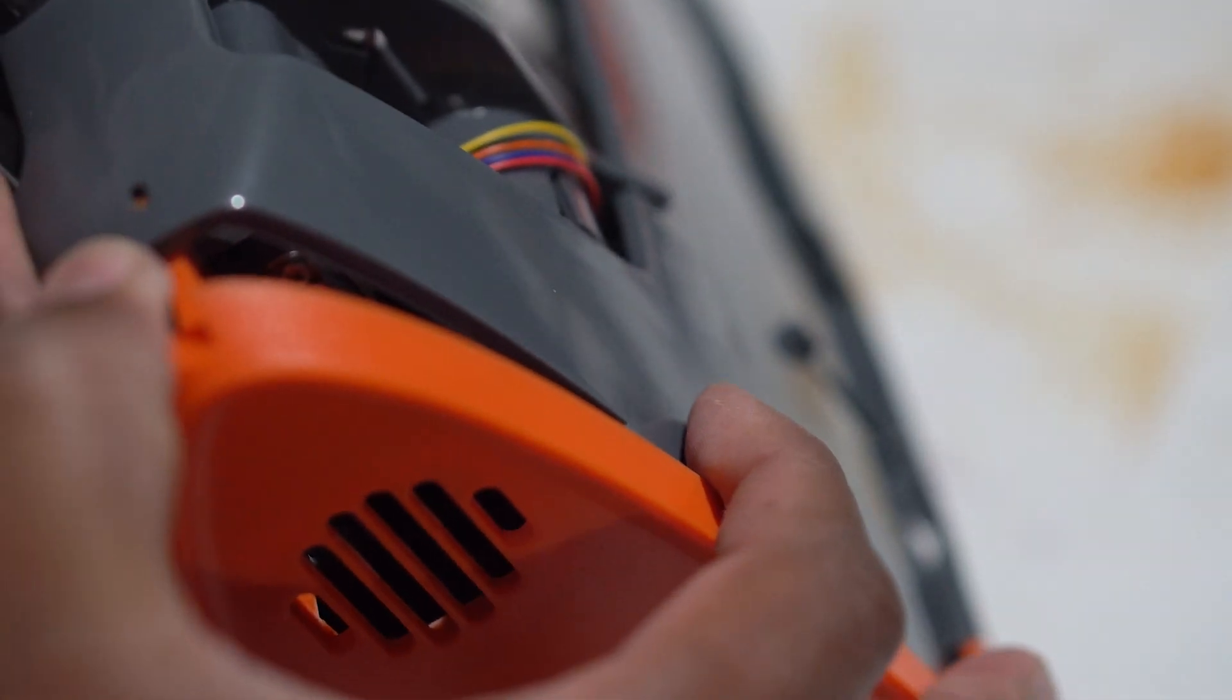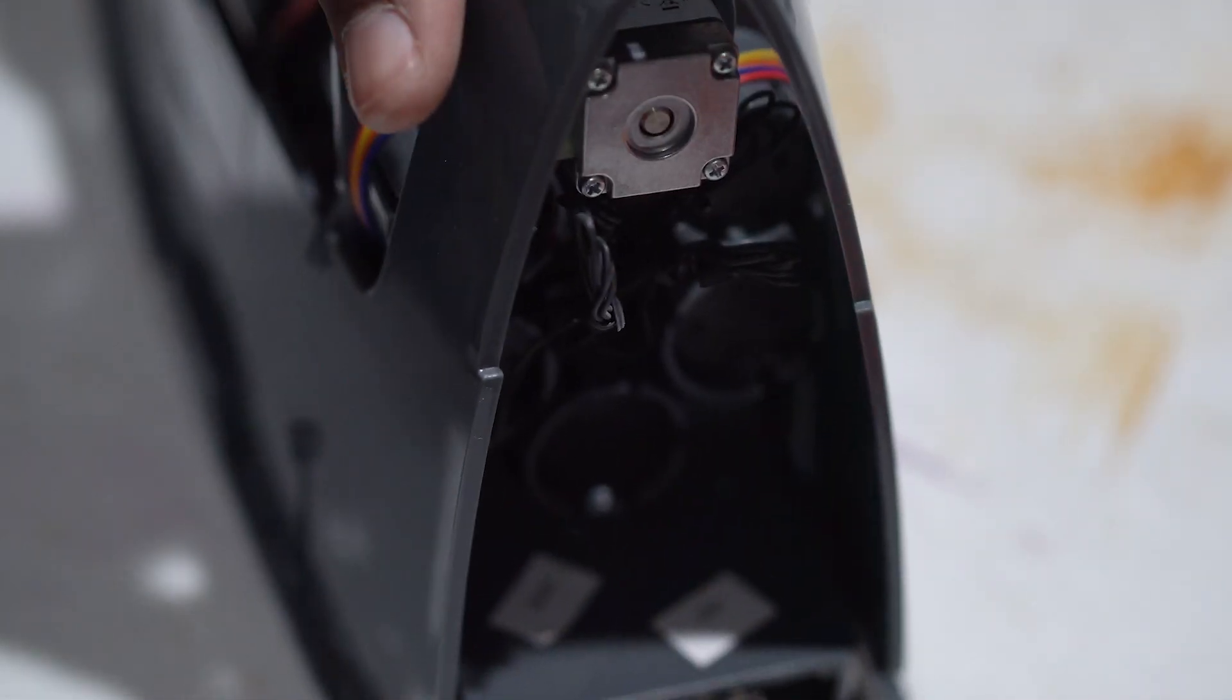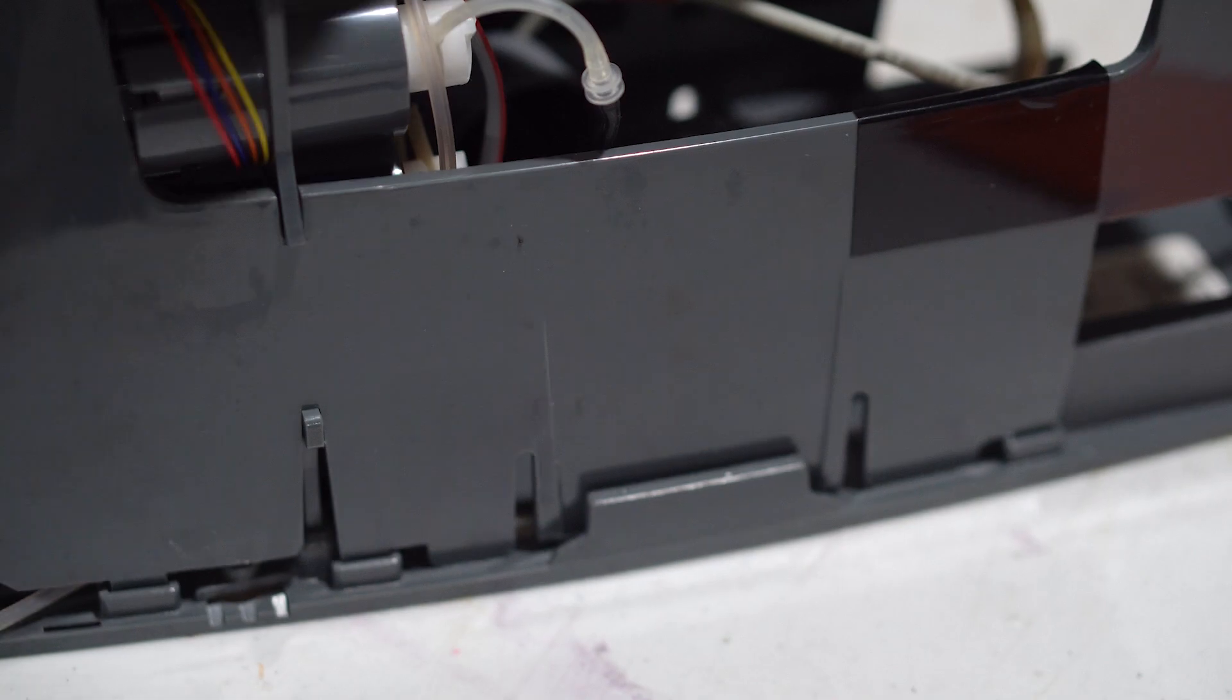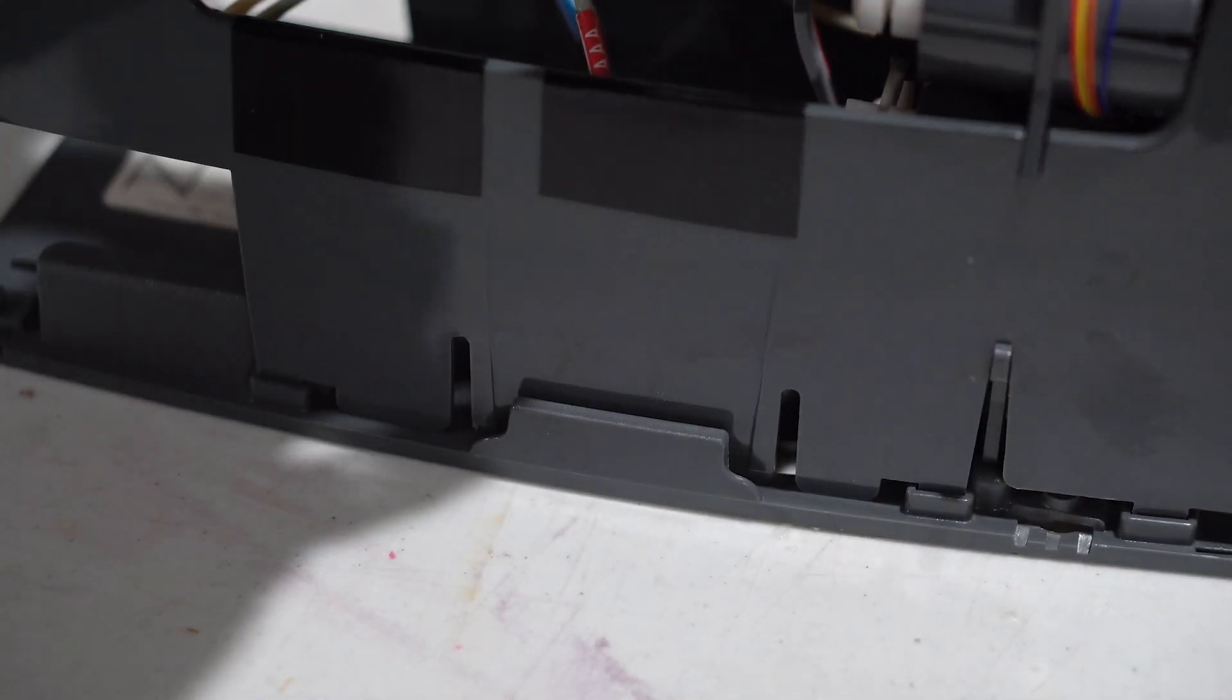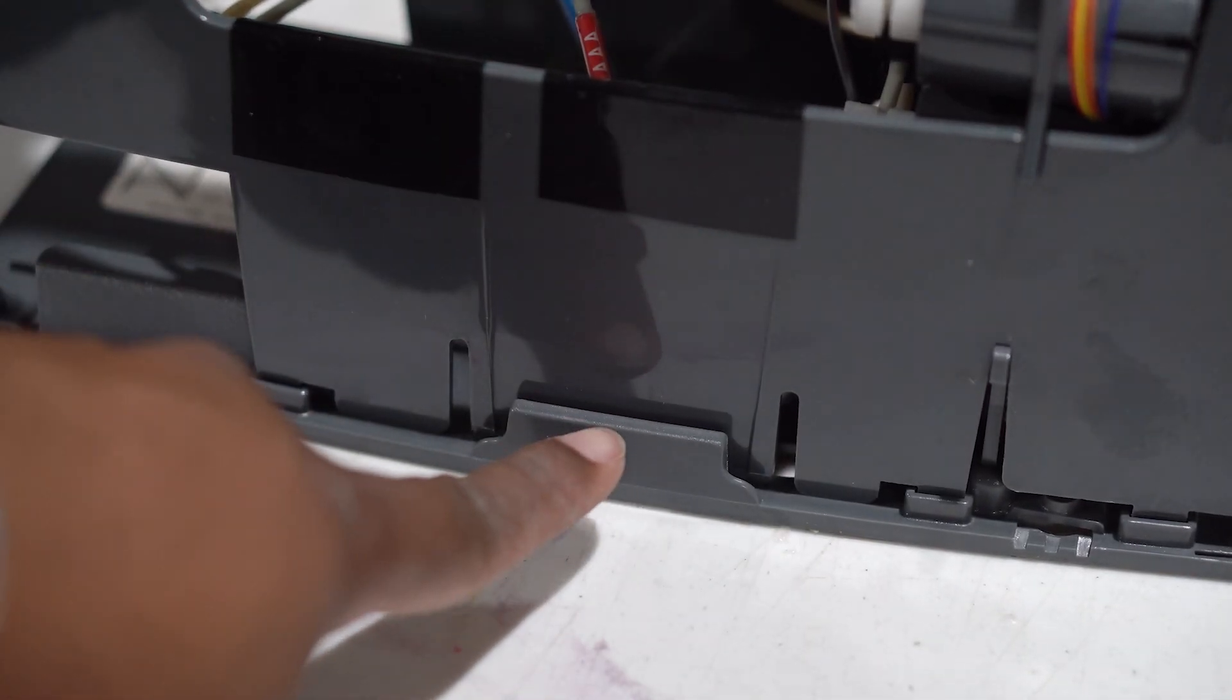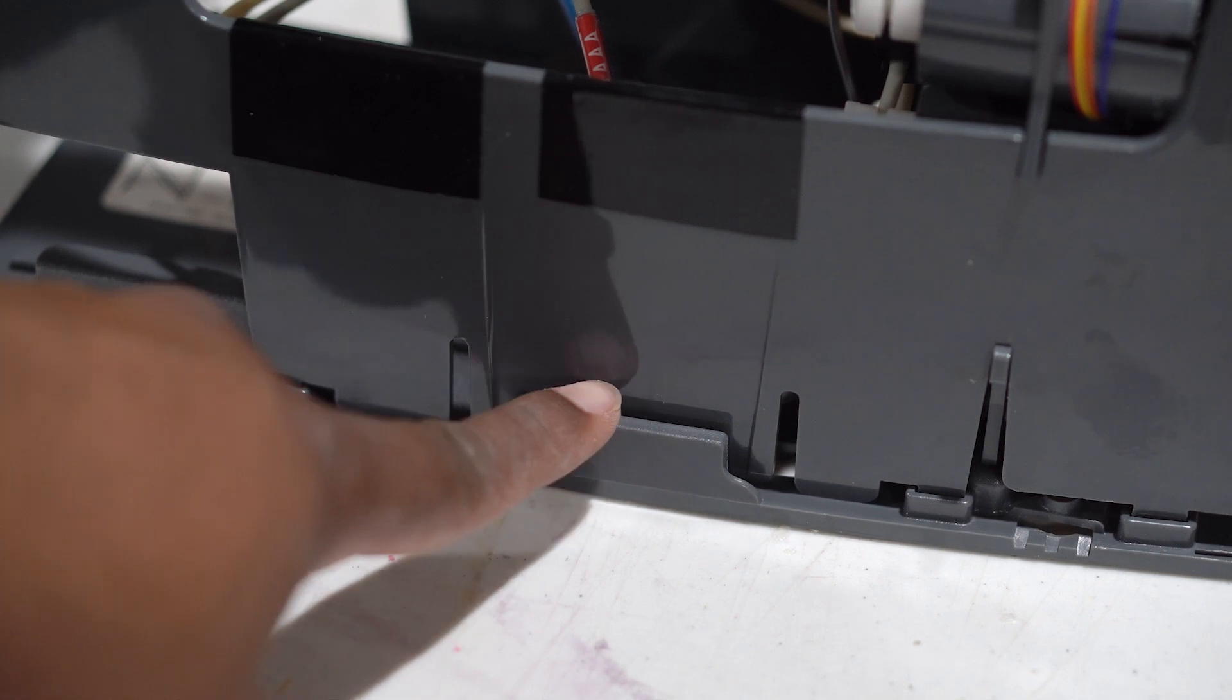The next step is to remove the upper Trident cage away from the Trident base. This is done by unclipping the two tabs on the sides, which will separate the upper cage from the lower cage.